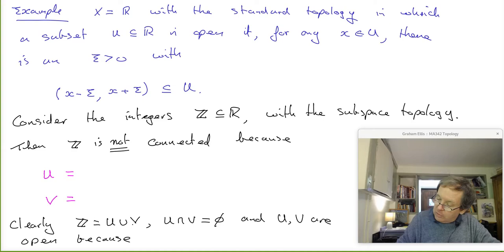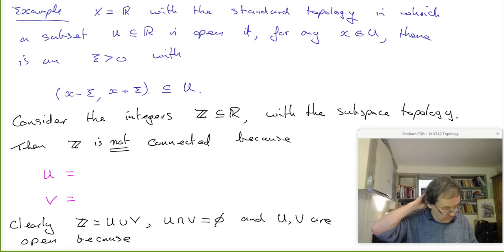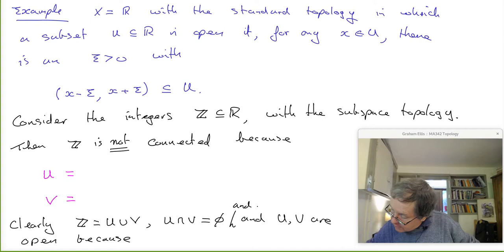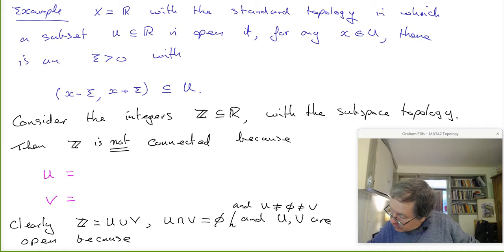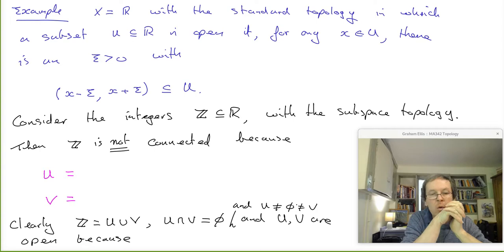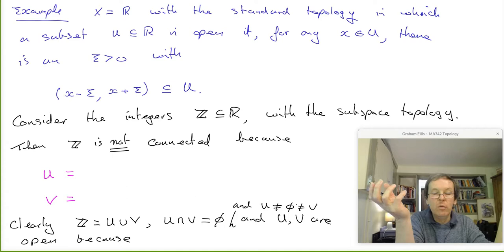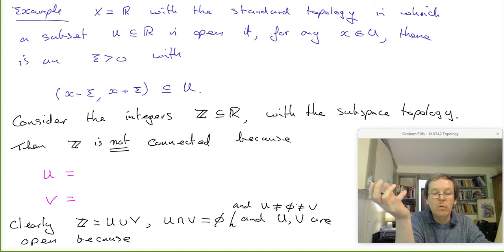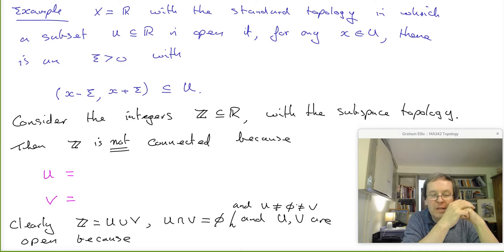I need two open sets U and V such that U union V equals the integers, U intersect V is empty, and neither U nor V is the empty set. Can anybody tell me two sets of integers whose union is the whole set of integers? Someone says 'less than zero, greater than zero' — that's a good answer but not quite right, because zero is an integer and won't be in those two sets. Only a minor tweak is needed.